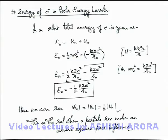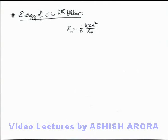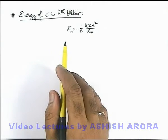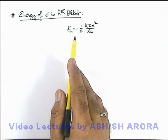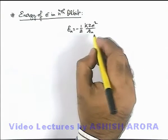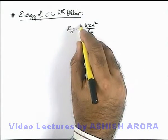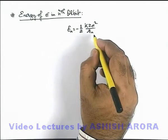On the next sheet let's continue on the elaborated form of energy of electron in nth orbit. In continuation, let's discuss about the energy of electron in nth orbit. On the previous sheet we have deduced the result is minus half k z e square over r_n.